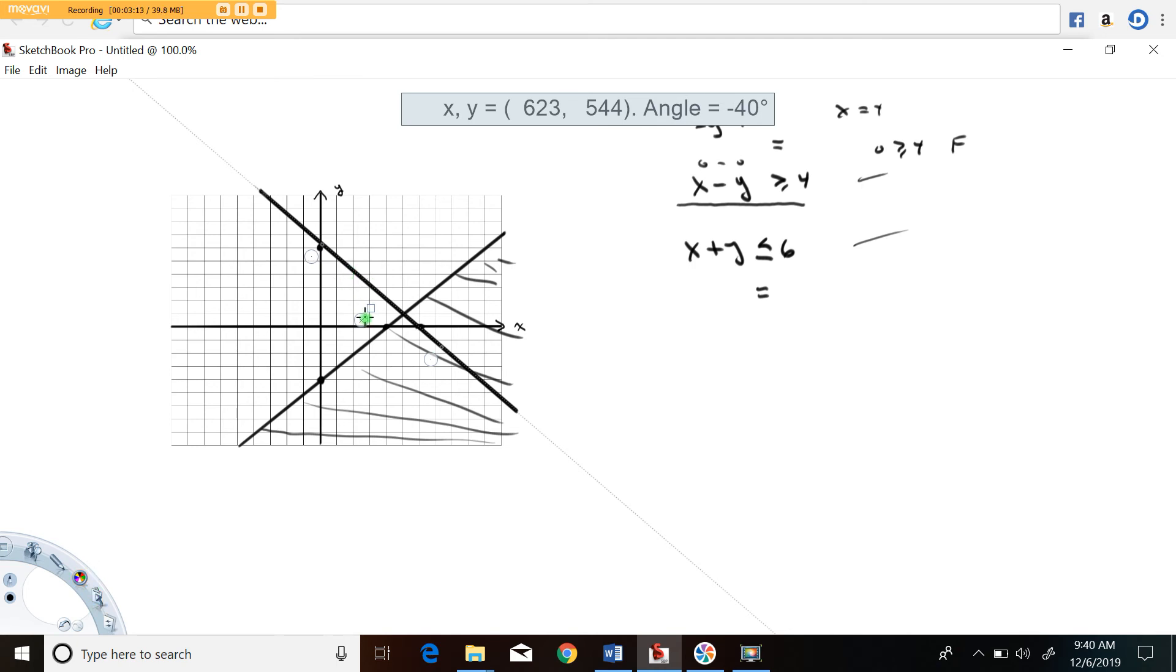All right next step is to decide which side of this line up and right or lower left also continues to satisfy the inequality. Notice that if you put 0, 0 in and again I'm just picking a nice easy point, 0 plus 0 is less than or equal to 6. That's a true statement which means the side that we're going to want to shade is lower left.